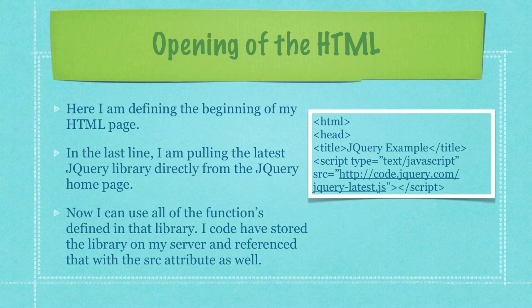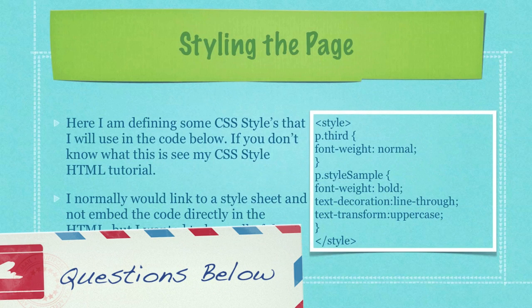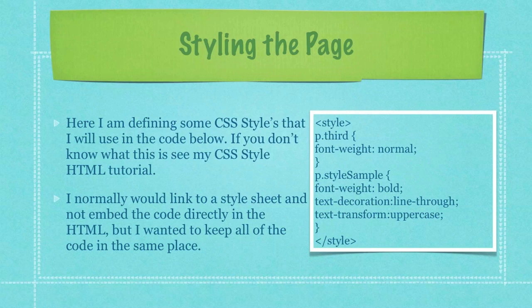I'll hit you with a bit of code and then describe it. Here I'm defining the beginning of my HTML page, and in the last line I'm pulling the latest jQuery library directly from the jQuery homepage. Now I can use all the functions defined in that library. I could have stored the library on my server and referenced it that way also, using the src attribute. Here I'm defining some CSS styles that I'll use in the code below.